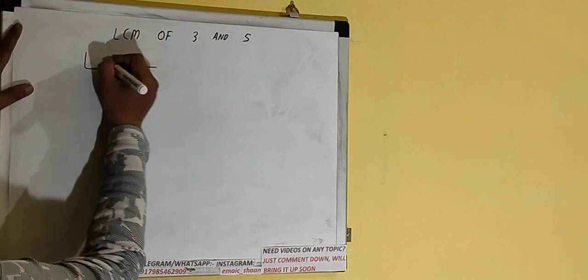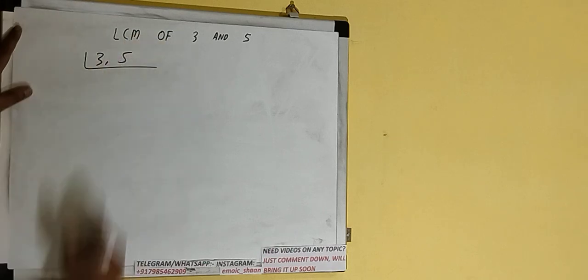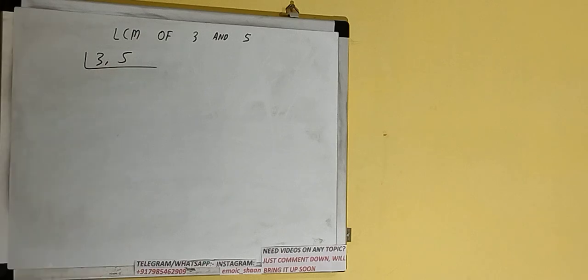First of all, we need to write down both the numbers like this: 3 comma 5. Next thing we need to do is we need to start with the lowest prime number 2 and check if any of the number is divisible or not. So if we check, none of the number is divisible by 2, so we'll check with the next lowest prime number.